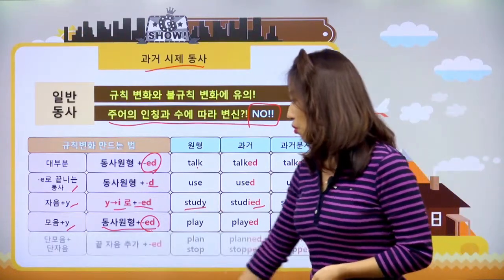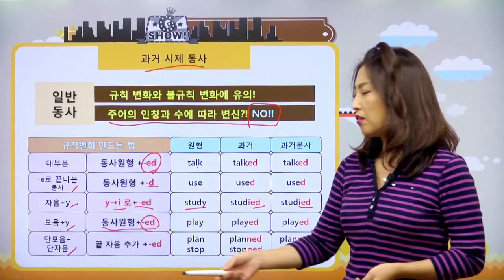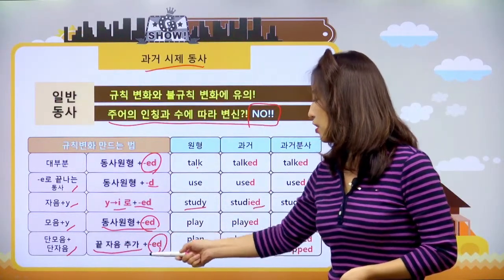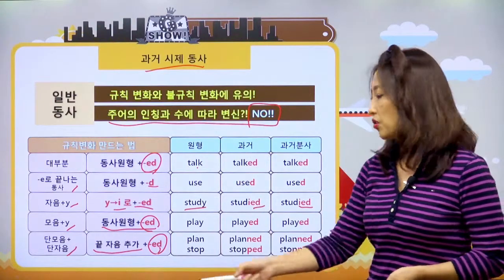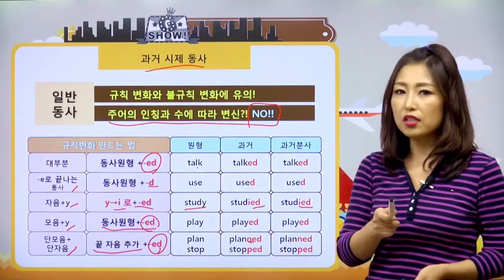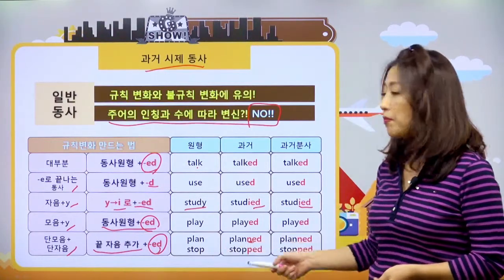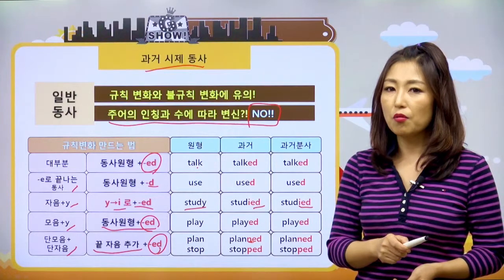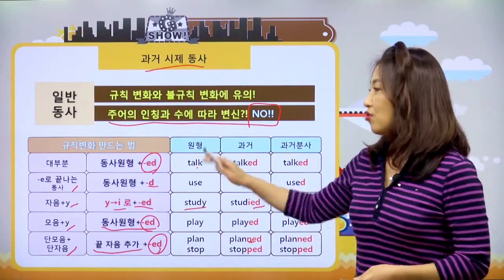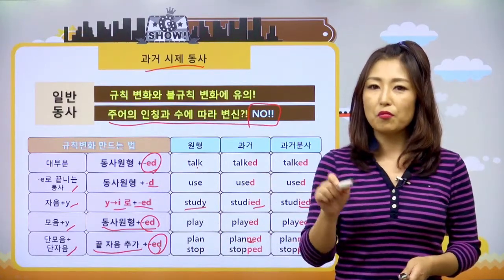마지막으로 단모음 단자음, big/bigger 기억하죠. 단모음 단자음은 끝에 자음을 하나 더 추가하고 ED를 붙여요. 예를 들면 planned, planned 해서 N 하나 더 쓰고 ED 붙이고요. stop 하면 stopped 해서 P 하나 더 하고 그 다음에 ED 붙여서 만드는 거죠. 규칙 변화는 이렇게 다섯 가지 정도로 구분을 해서 외우면 돼요.